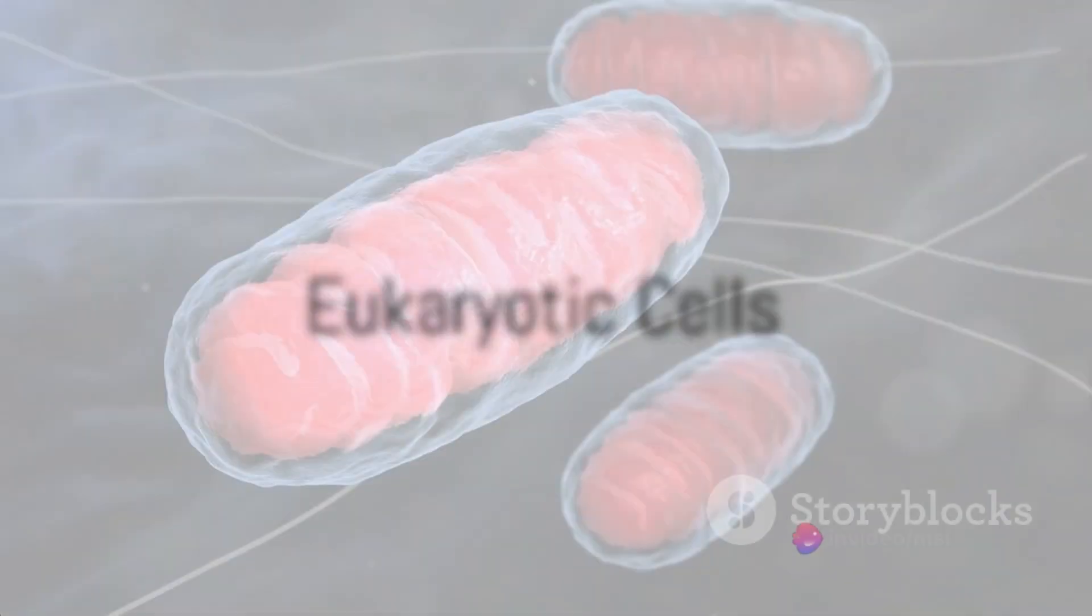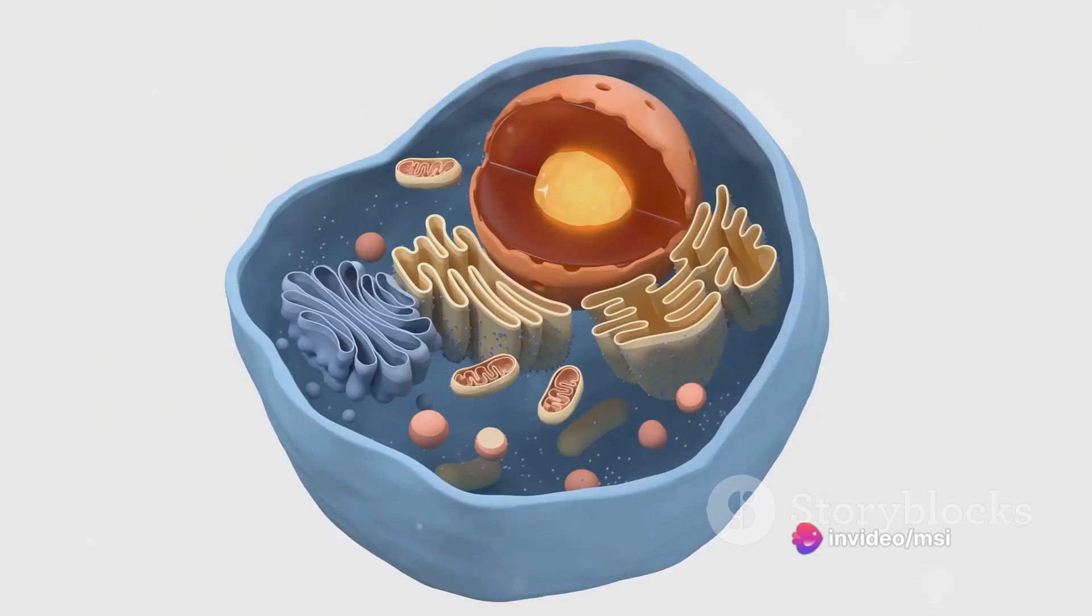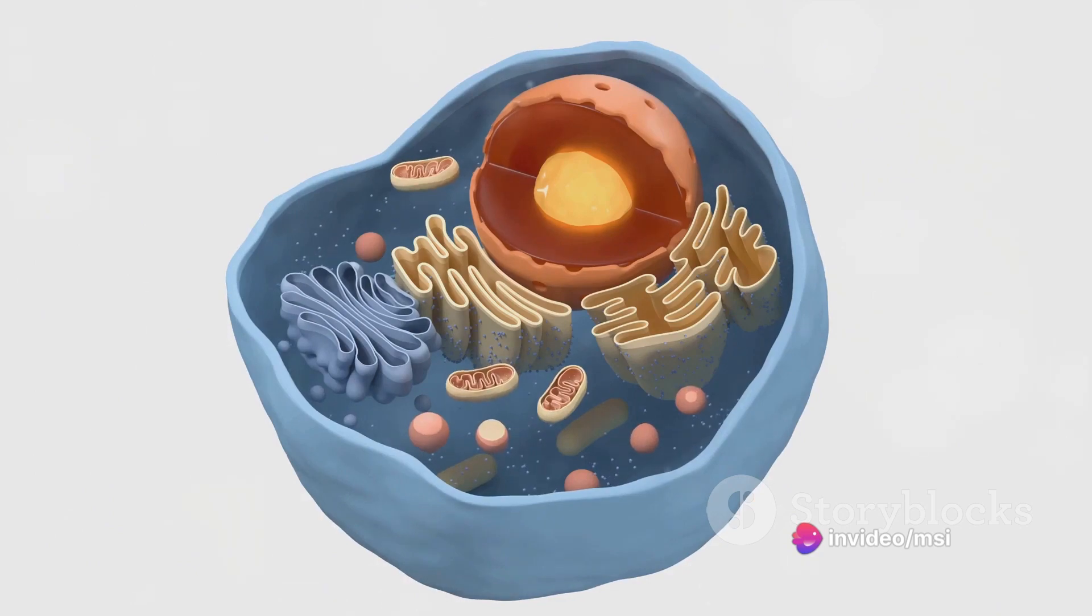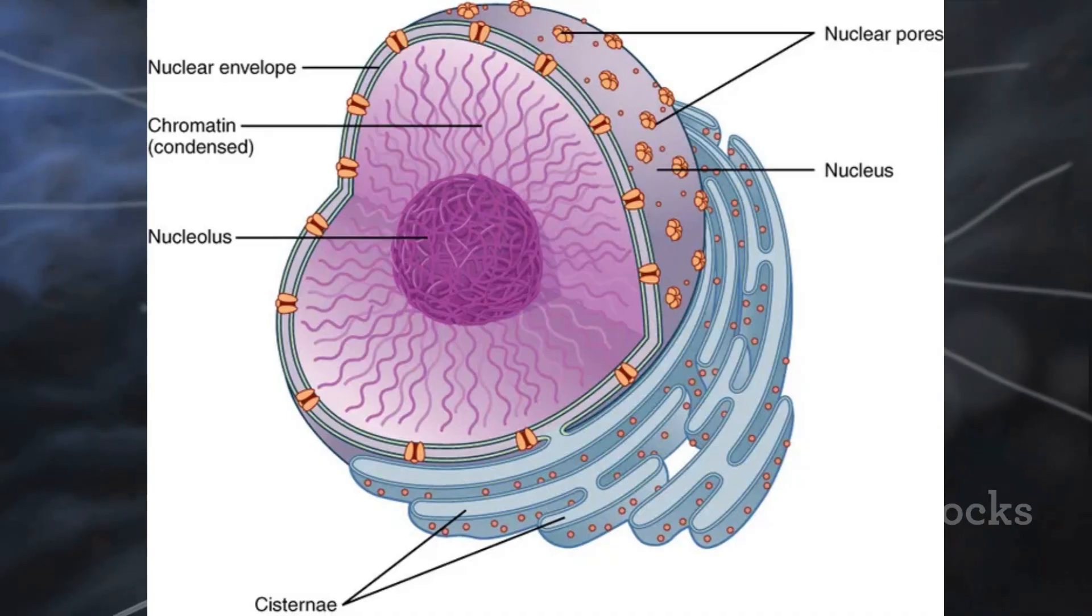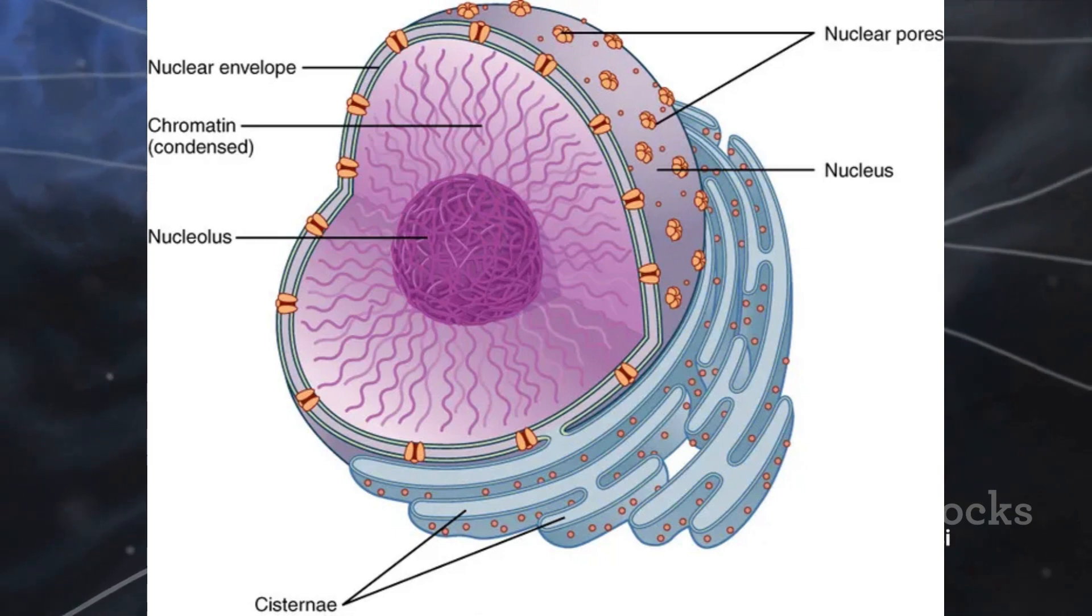Now, envision a luxurious penthouse suite, spacious and organised. This mirrors a eukaryotic cell, larger and more complex, offering a more organised living space. The defining feature here is a membrane-bound nucleus, a walled city, if you will, that protects the genetic material from the hustle and bustle of the cell's activities.